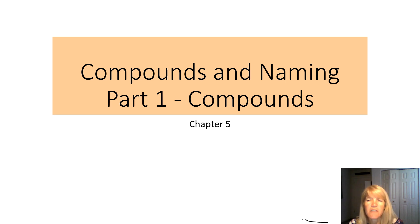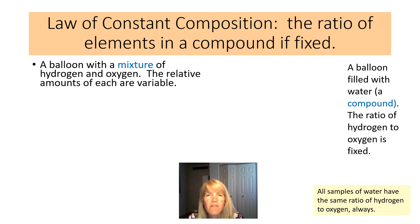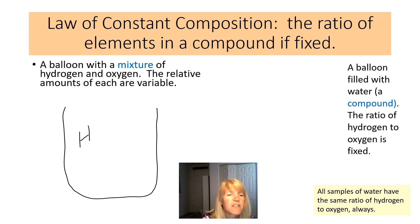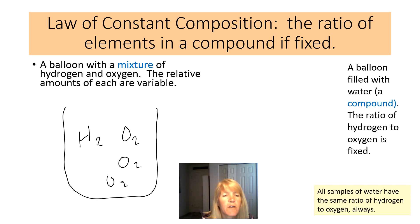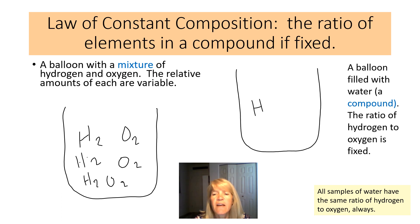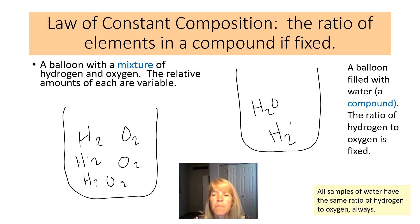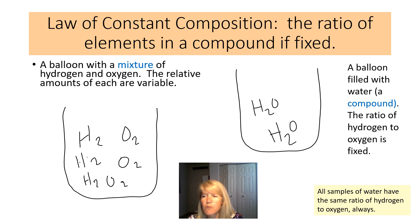Naming compounds, chapter 5. Let's start with the law of constant composition. What this says is that the ratio of elements in a compound is fixed. Imagine you had a mixture of hydrogen and oxygen — you could have any proportion, a lot of oxygen or a lot of hydrogen. But if you had water, it has to be in the ratio of H₂O: two hydrogens for every one oxygen. That's what the fixed ratio means.